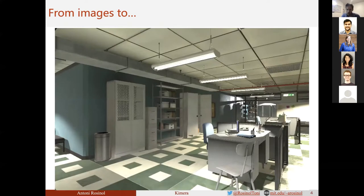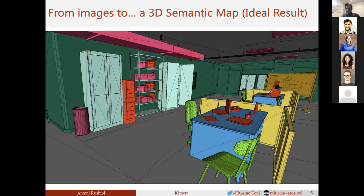Kimera builds a semantically annotated 3D map from multiple images, like the one shown here, where we can see a chair, desk, bin, etc. This is the ideal 3D reconstruction we want, with geometry semantically labeled—green objects representing chairs, desks in blue, and so on. Obviously, this is an idealized 3D reconstruction.